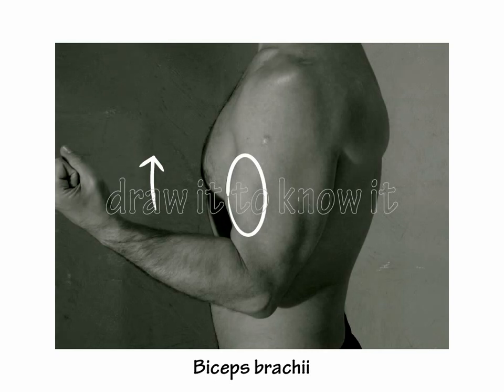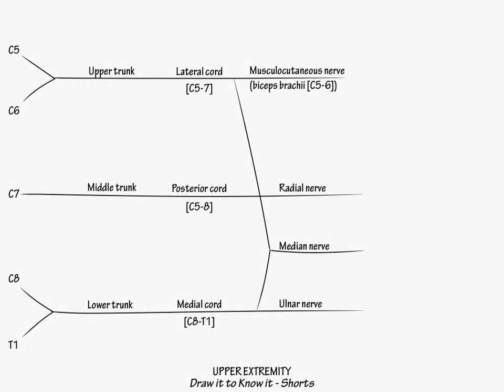Now show that C5, C6, and C7 derive the long thoracic nerve, and indicate that it innervates the serratus anterior, which pulls the scapula forward.